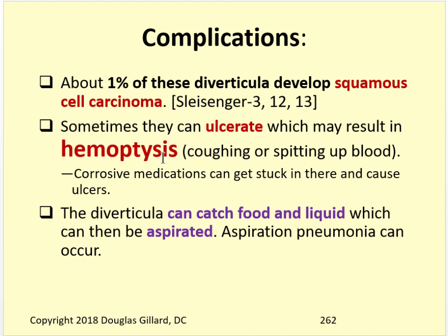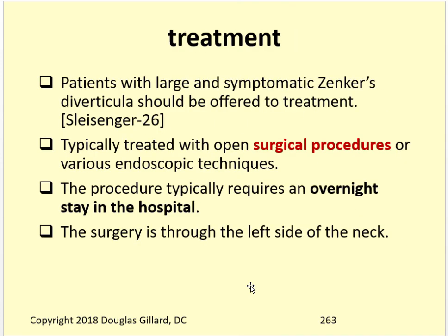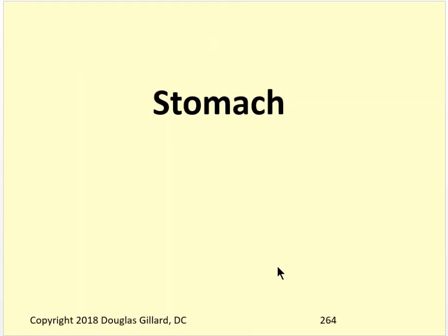It could erode as well, which is not a good thing - you can get an infection in the region. Can you get peritonitis from that? No, because this occurs up in the upper part, by the upper esophageal sphincter. If the lower esophageal sphincter ruptures down there, you could get peritonitis - that's intraperitoneal. This is not. It can catch food and you can aspirate it. Patients with large and symptomatic Zenker's diverticula should be offered treatment. There are surgical procedures - you can do it openly or through an endoscope to reduce it, sew it up so it stops catching food. It's not that big a deal - it's an overnight procedure done through the left side of the neck usually.